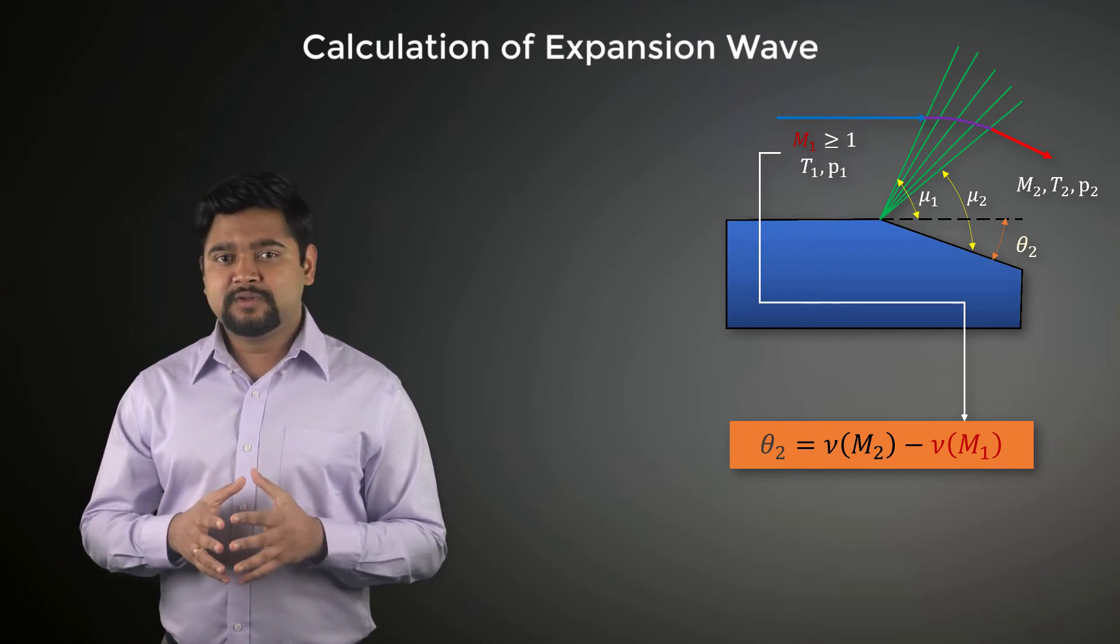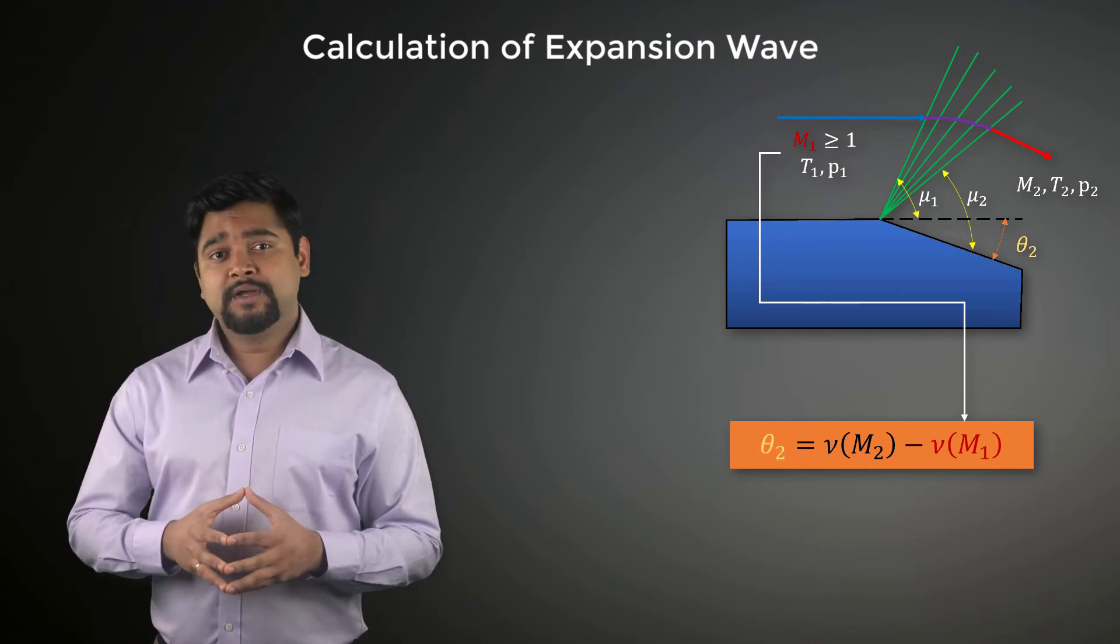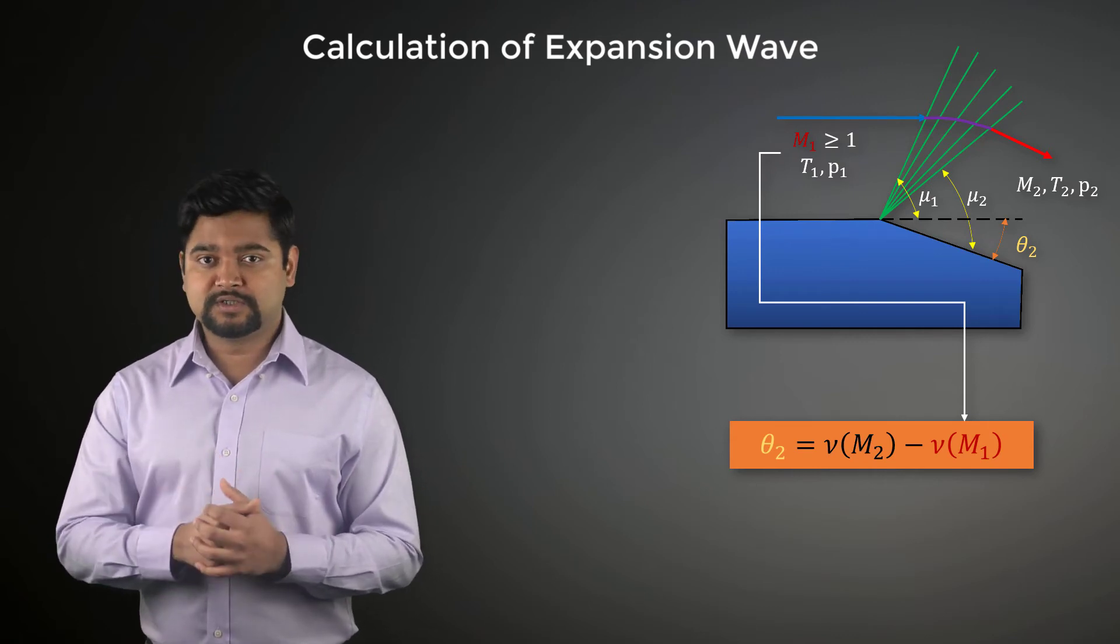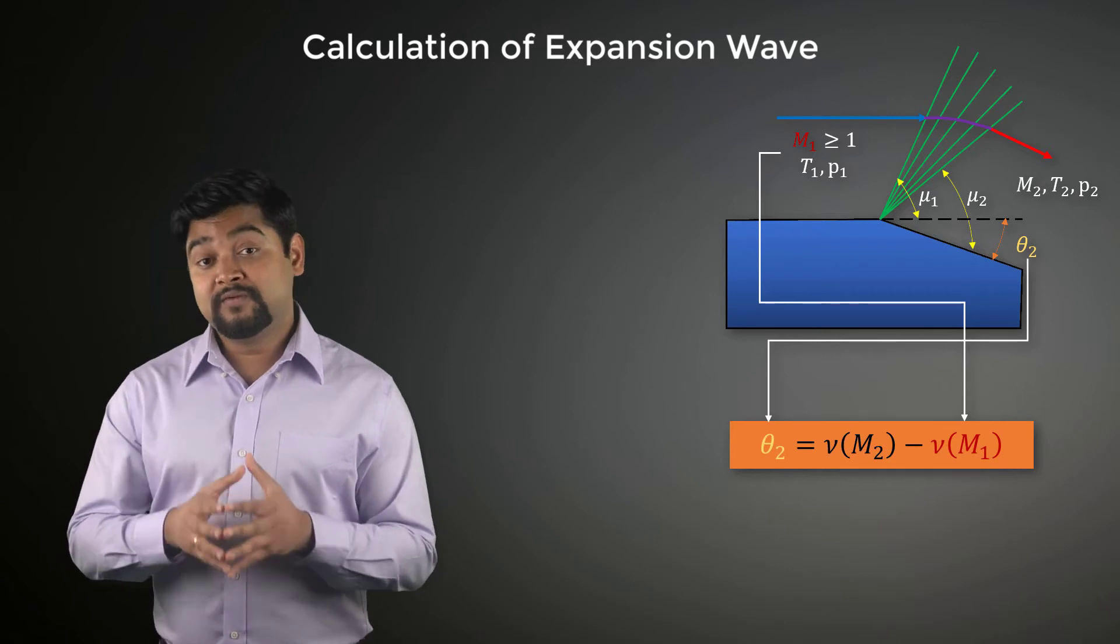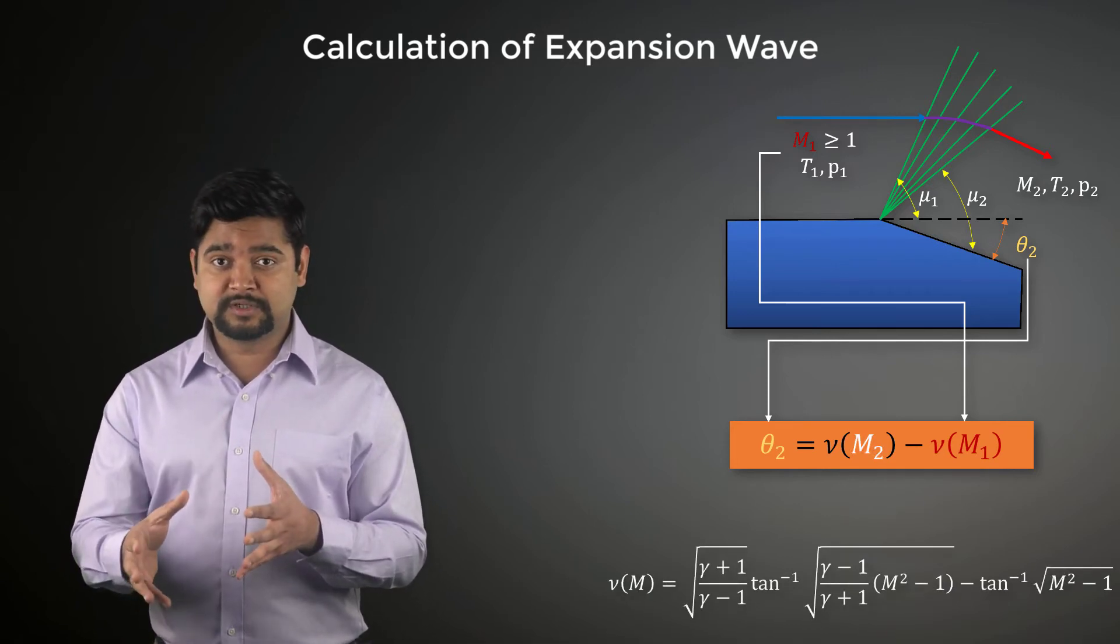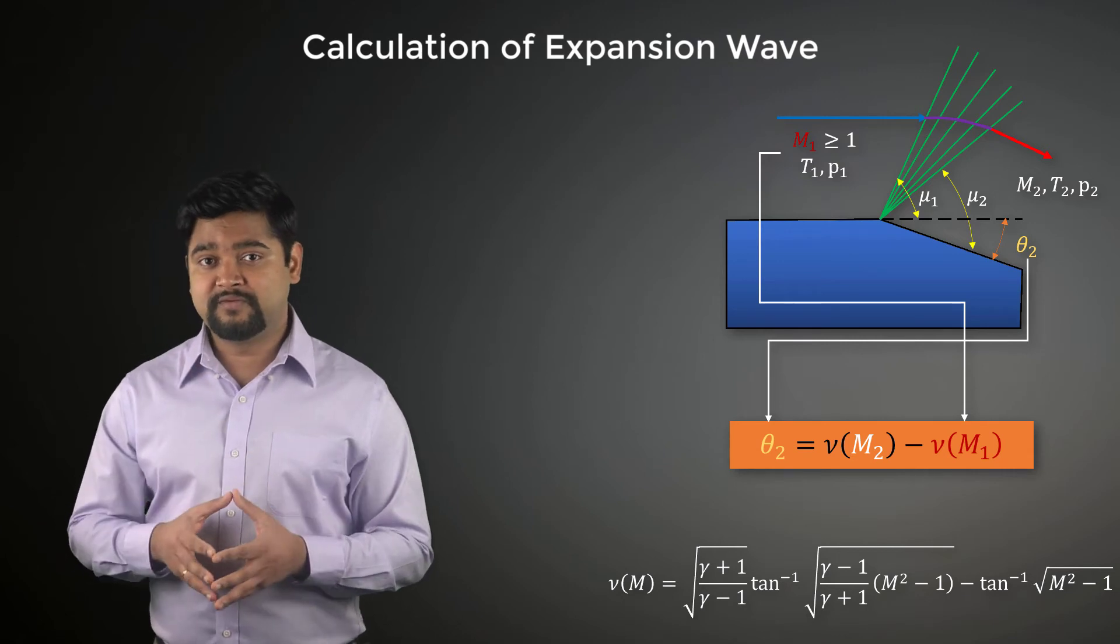Since we know the turning angle theta 2, we can then calculate nu from this equation. Once we have nu M2, we can calculate M2, that is the Mach number downstream from the expansion fan using Prandtl-Meyer function.